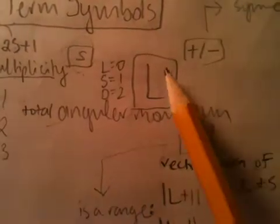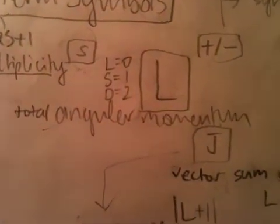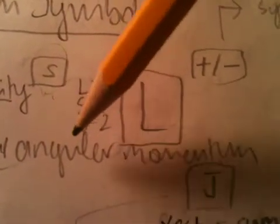Then, your total angular momentum refers to this L. If you have 0 angular momentum, the notation is L. If you have S, then your angular momentum is 1, D is 2, and etc.